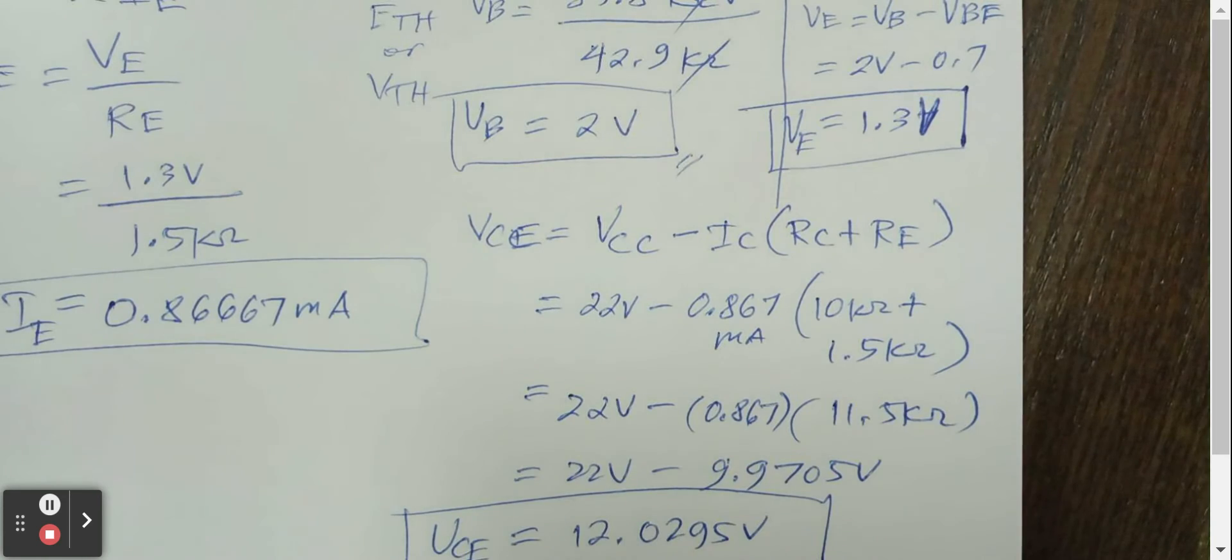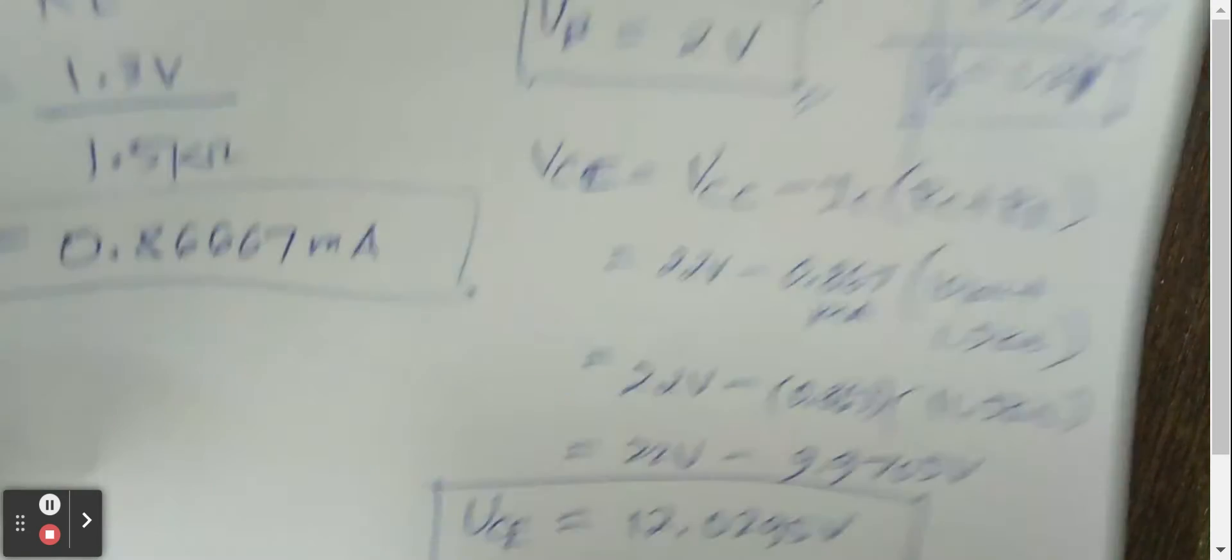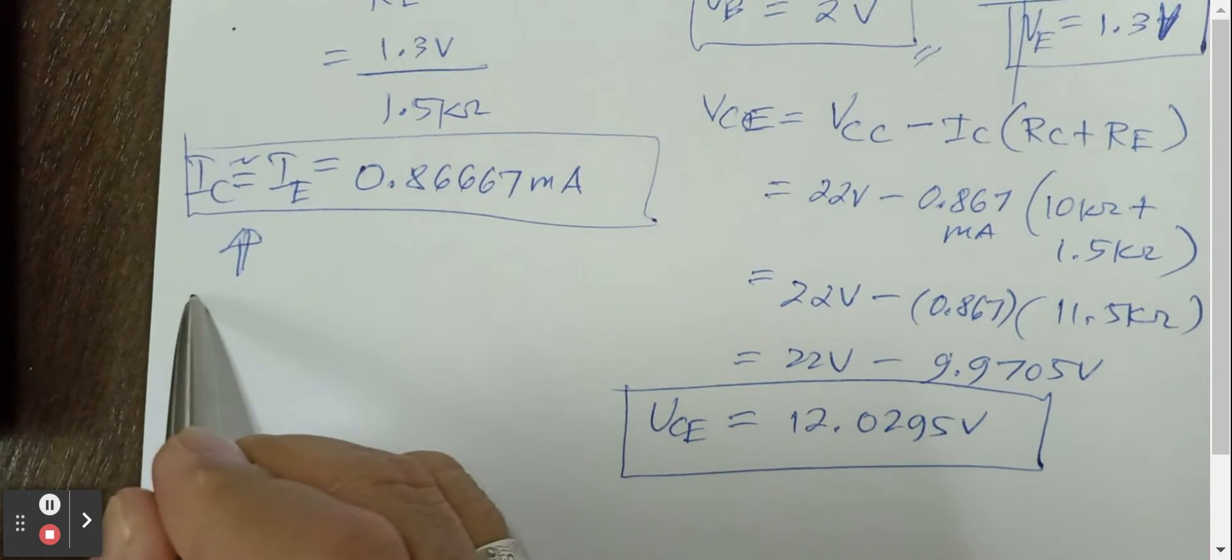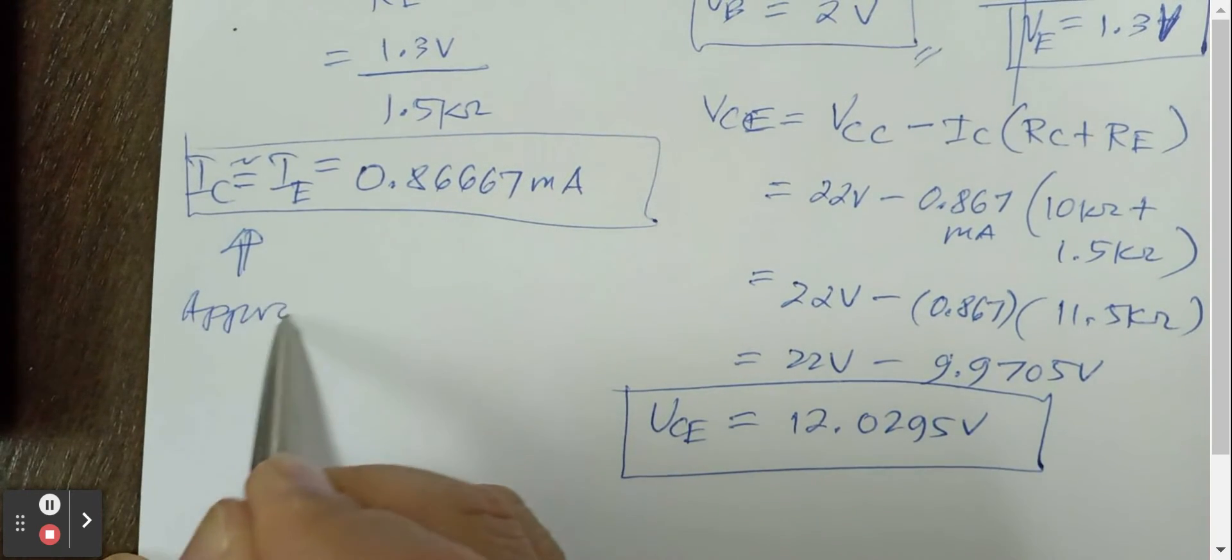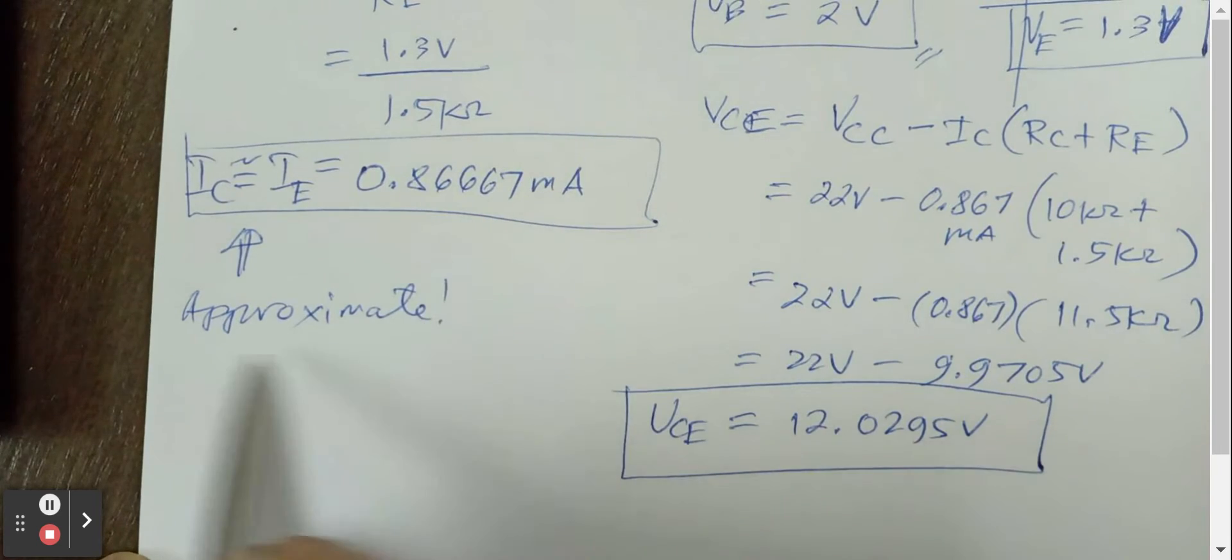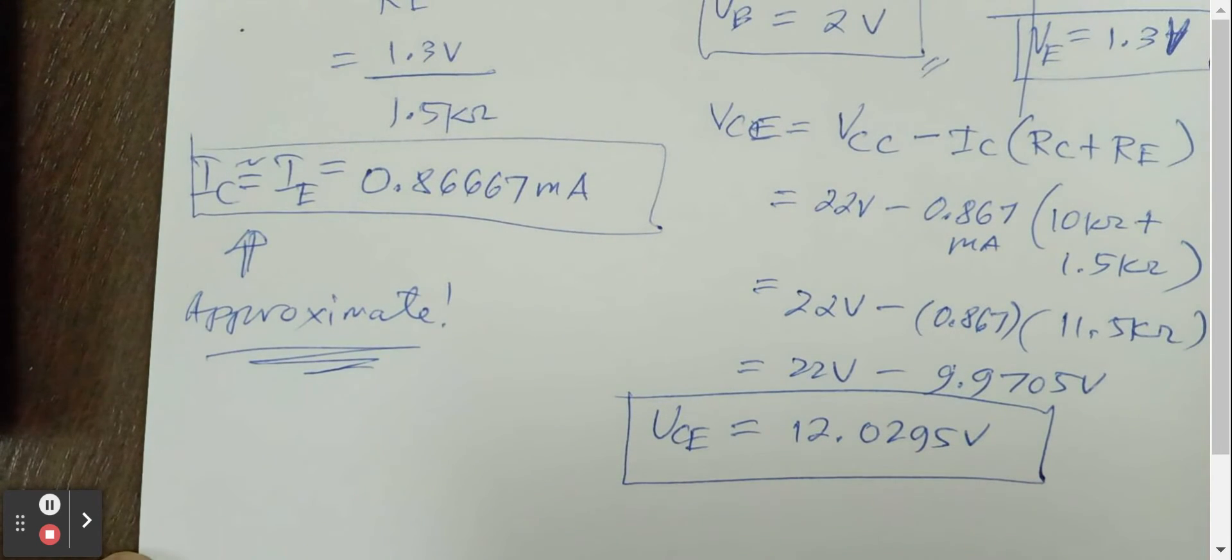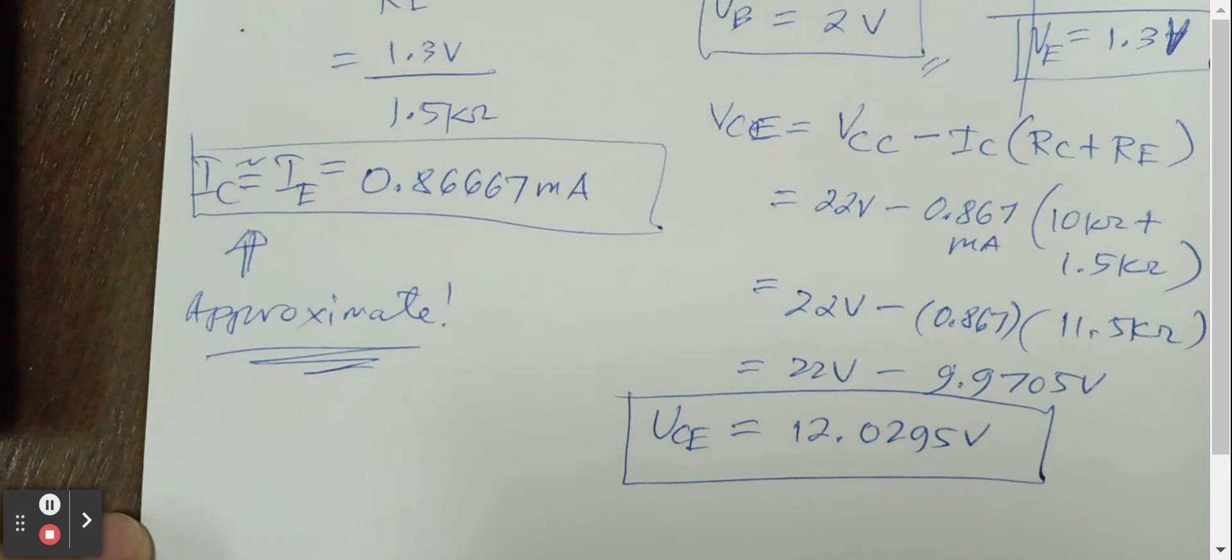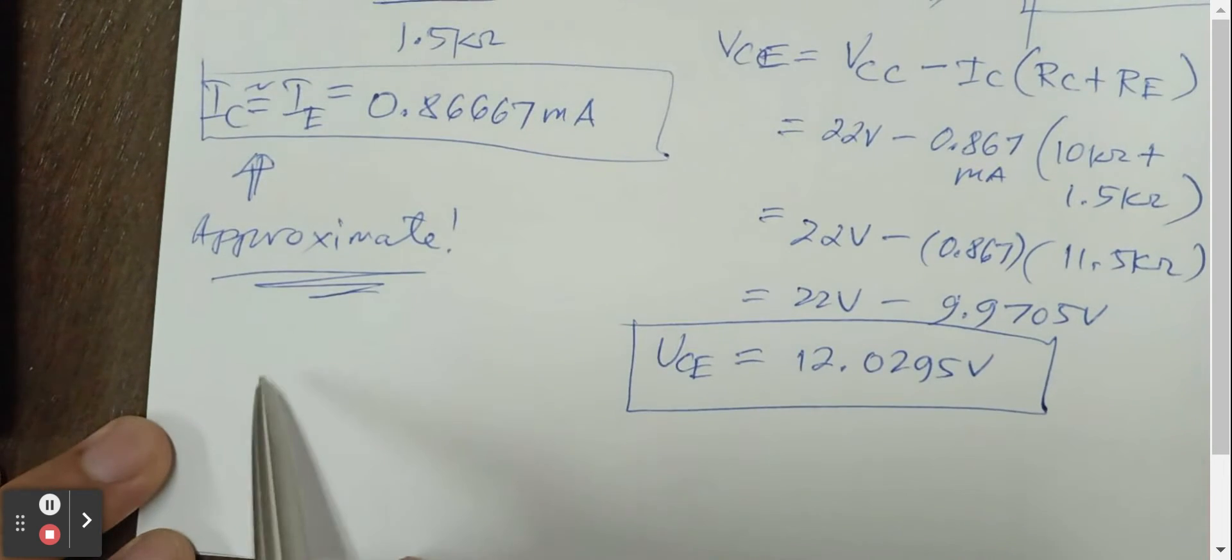There you go. And then after that, this is the approximate that we have done. Instead of doing beta Ib, we did this. Ic is approximately equal to Ie. So for the DC load line,